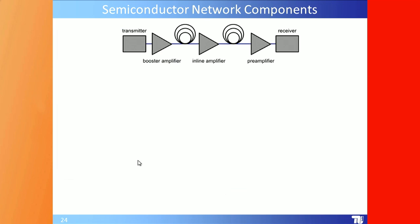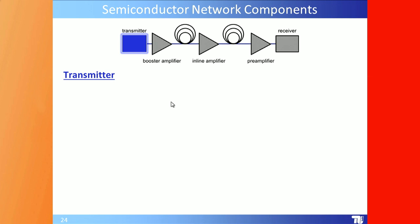A semiconductor network has a transmitter, booster amplifier, inline amplifier, pre-amplifier, and receiver. I will talk about the transmitter and the amplifiers. A transmitter should have pico- or sub-picosecond pulse widths.